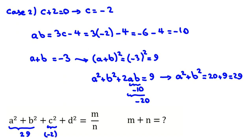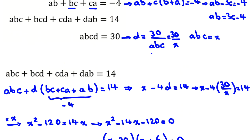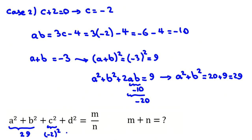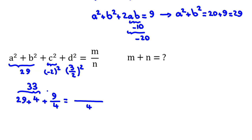Now c = -2 so c² = 4. For d: since x = abc = 20 and d = 30/x = 30/20 = 3/2, we get d² = 9/4. Therefore a² + b² + c² + d² = 29 + 4 + 9/4 = 33 + 9/4 = 132/4 + 9/4 = 141/4.